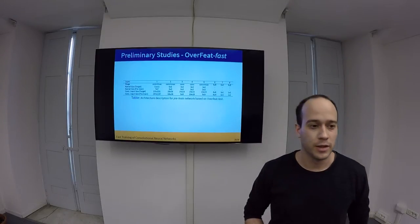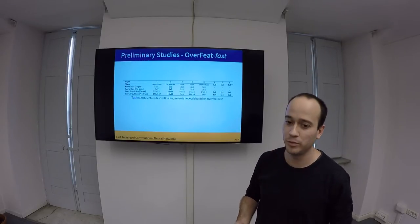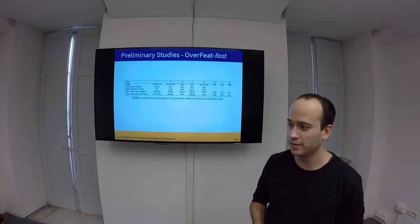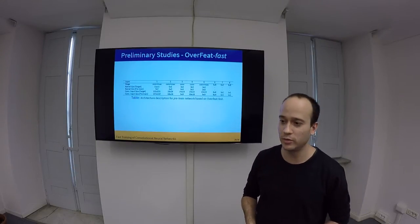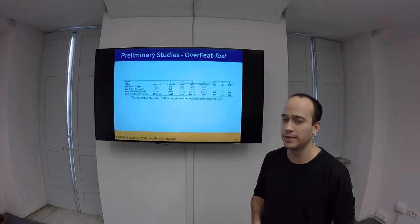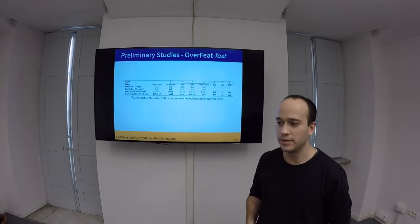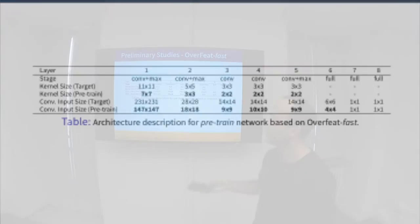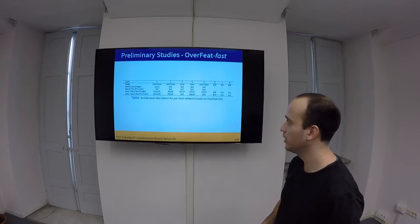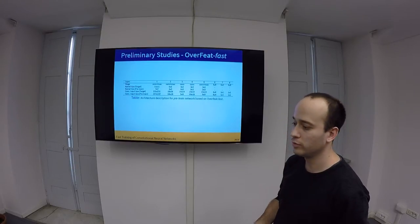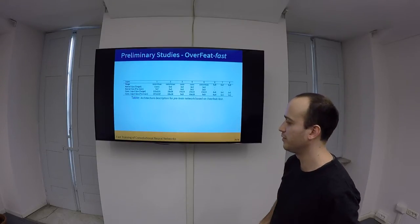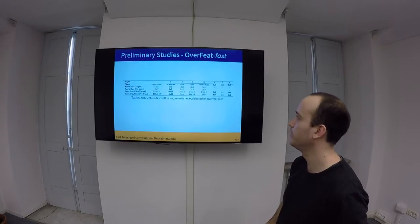So, before we do this, it's nice to check with some preliminary example if this can actually work. Our test case is the OverFeat network, which I believe won the 2013 detection challenge for ImageNet. Basically, the OverFeat, the fast version of OverFeat, which is an eight-layer convolutional neural network, and here you can see that we have the target network, which is the original network. For the first layer, it uses 11x11 convolution kernels. The second layer uses 5x5 kernels, the third one uses 3x3, the fourth one 3x3, and the fifth one. And then we have some fully connected layers.